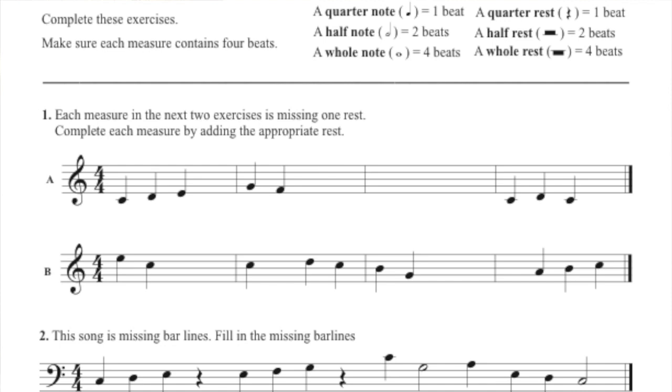In the second measure of A, we notice we have two quarter notes and nothing else. So if we're in four-four and we have four beats in every measure and we only have two notes, then we're missing two other beats. So we use a half rest, which gets two beats.